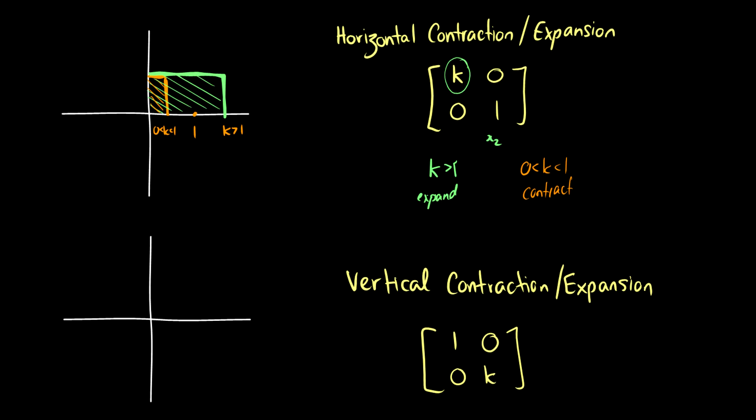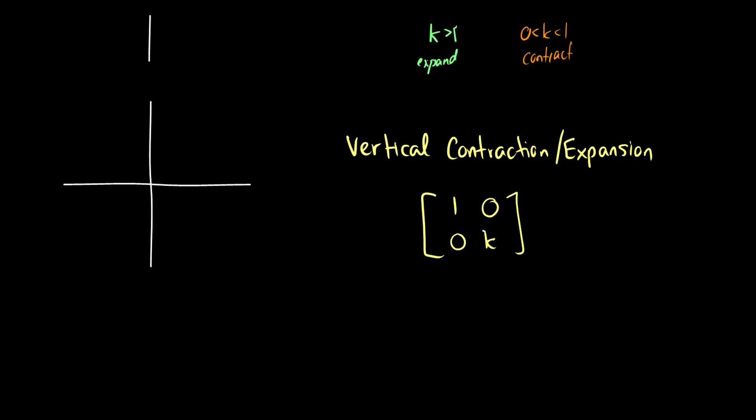Similarly, with vertical contraction expansion, you're just taking some number k to be kx2. If k is greater than 1, then you expand. If k is between 0 and 1, you're contracting. So you might see a box that looks like, for the expansion, it might be tall like this, and for the contraction, it might be super short. This original box, which we'll do in blue, is going to get either shorter or bigger, depending on what value of k you choose.